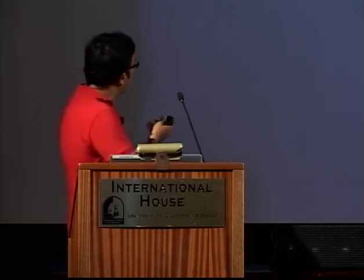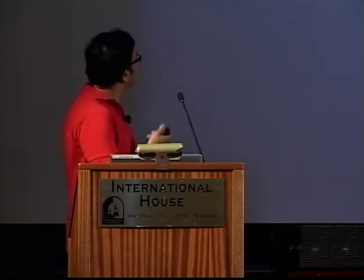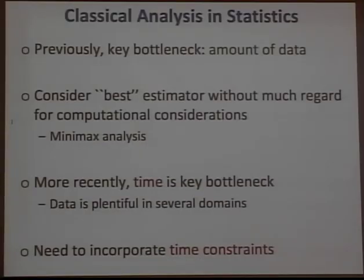The setup involves a lot of data to figure out at what level you want to bid, but very little time to make decisions — frequently on the order of milliseconds or even less. This is somehow different from the kinds of constraints we have in statistical estimation theory, where the typical constraint is the amount of data.